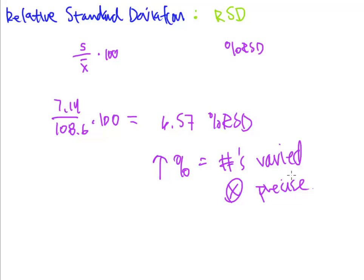Again, higher the percentage, more varied the numbers are, which means you are not precise in your measurements. And this way, this allows us to compare the standard deviation to the average. And we get a better picture of your precision by doing that. 7.14 doesn't really mean anything at all.